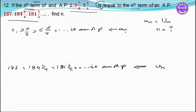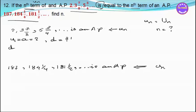So the first term u_1 is equal to a, which is equal to 2. Our common difference d is equal to... d is 1/8 minus 2.